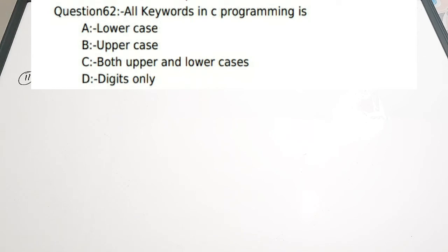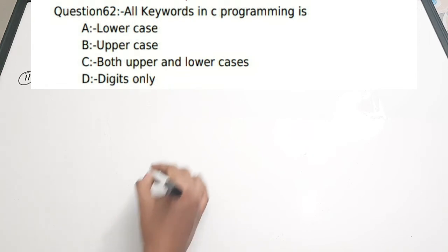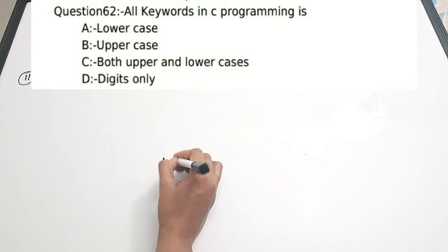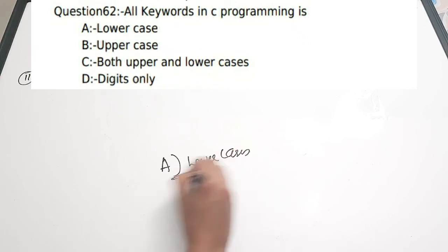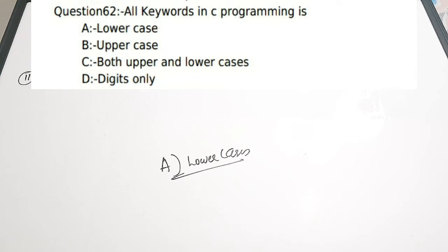Question 11: All keywords in C programming are — A) Lowercase, B) Uppercase, C) Both upper and lower, D) Digits only. The correct answer is A, lowercase. In C programming, keywords can only be written in lowercase.